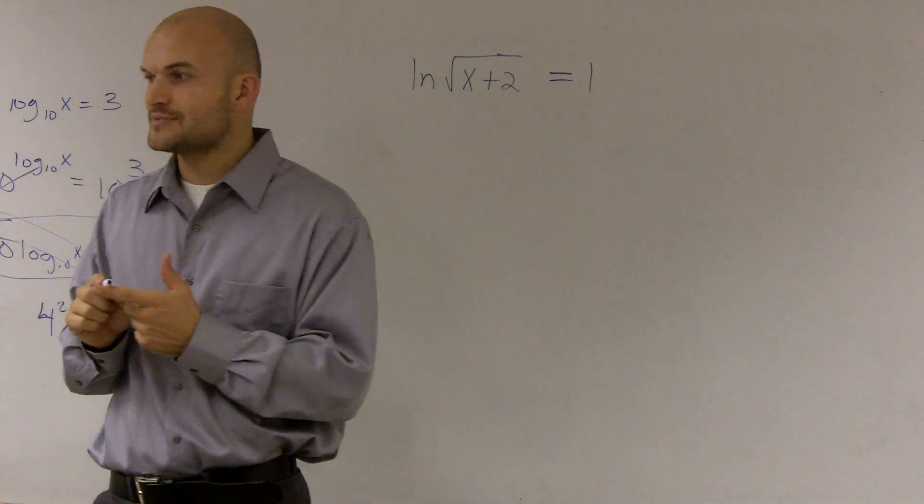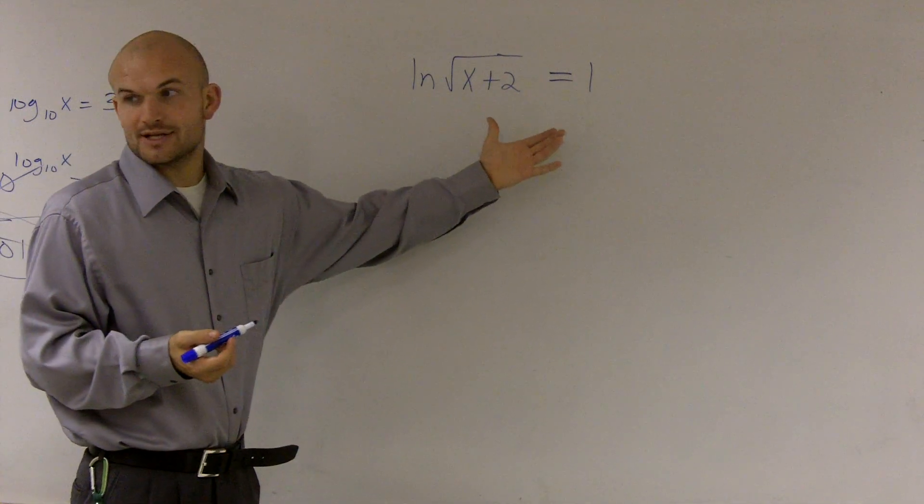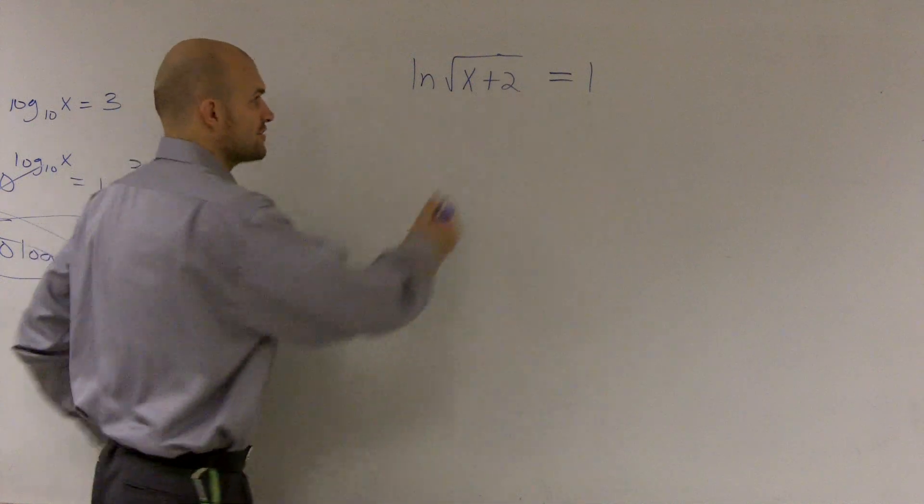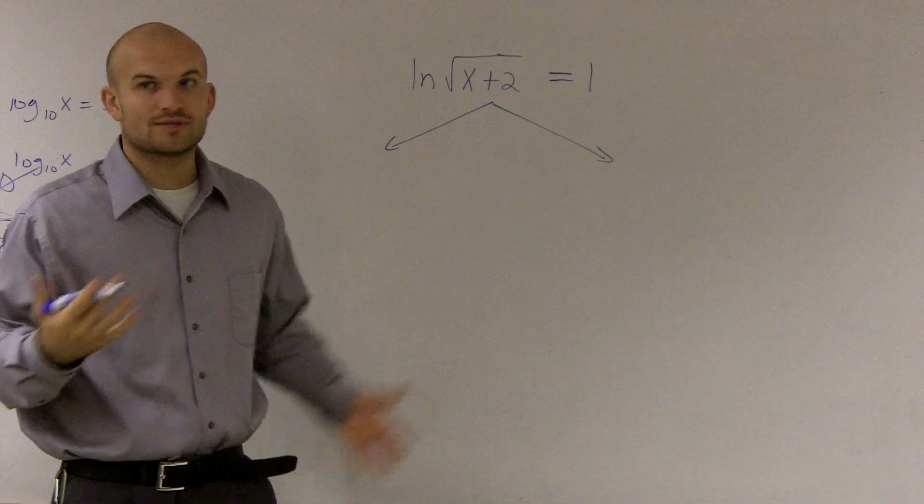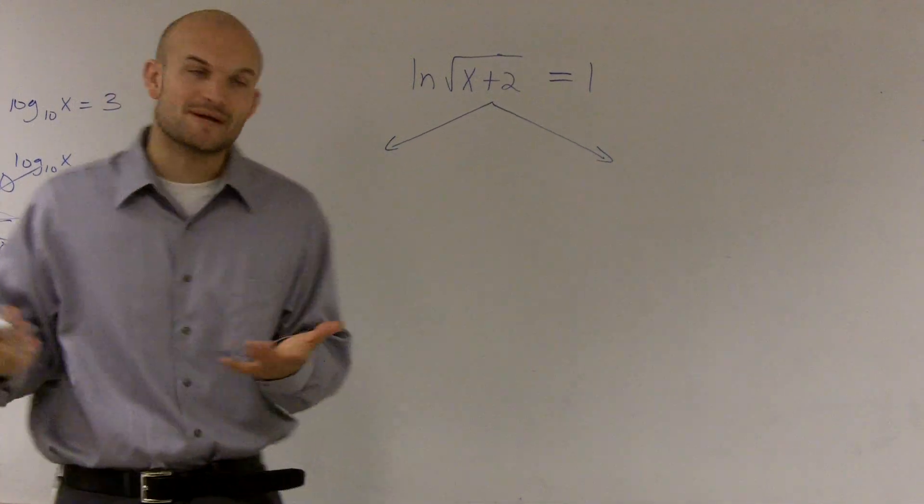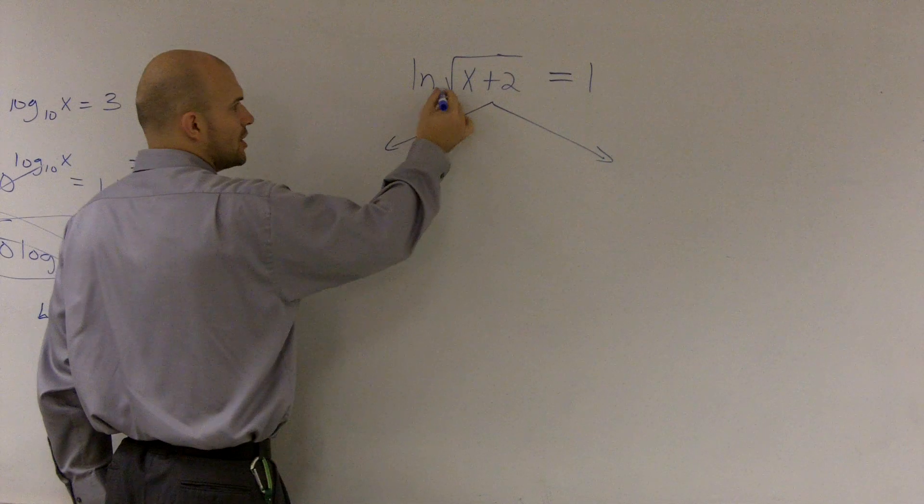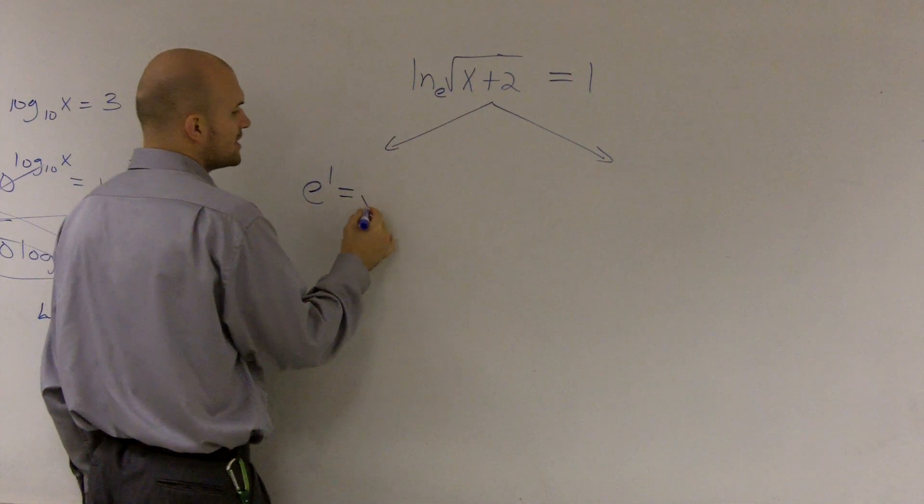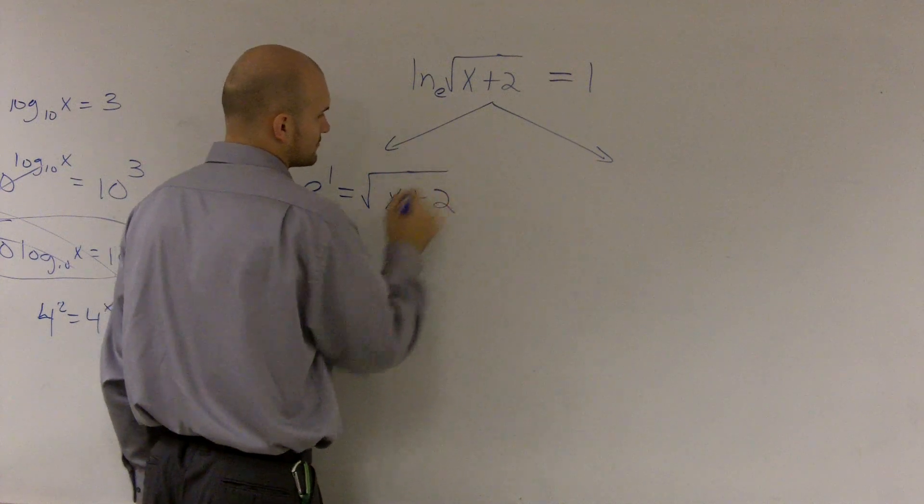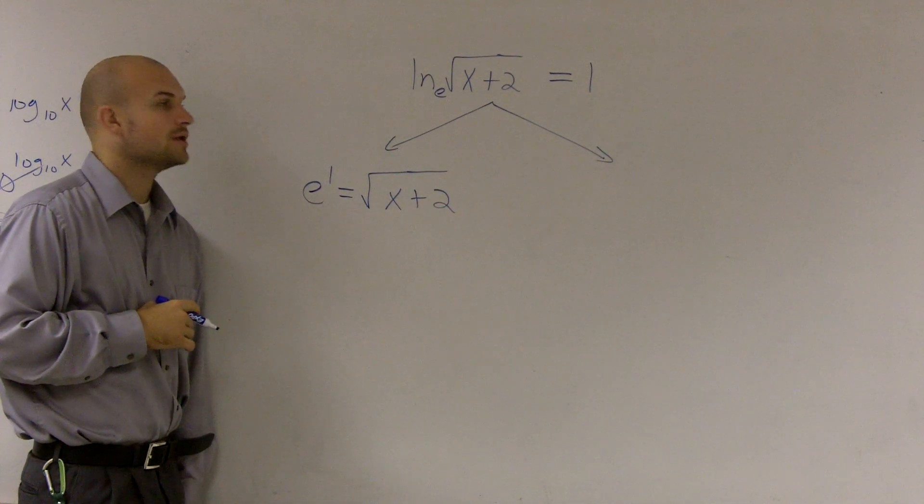So we're going to solve. There's two different ways we can work on this. First way, if this is a very basic one, you can always transfer it to exponential. That was the first thing we learned with logarithms and exponentials. Transfer this to exponential form. We know since it's the natural logarithm, there's a base e. So I can rewrite this as e to the first equals square root of x plus 2.